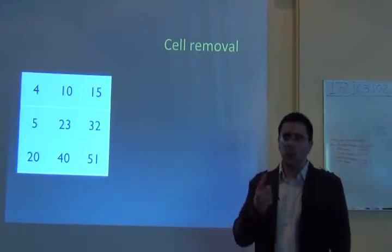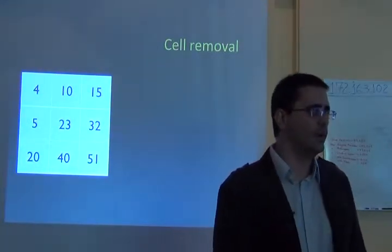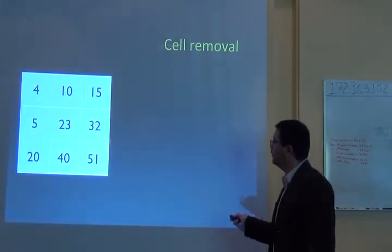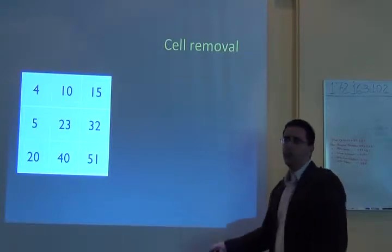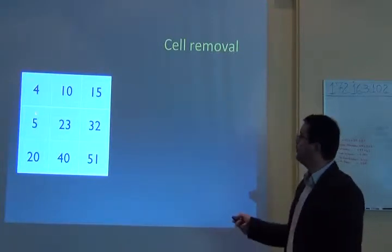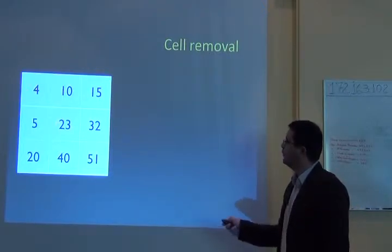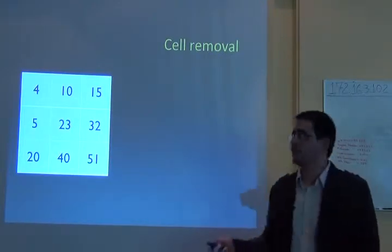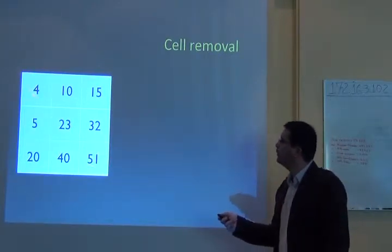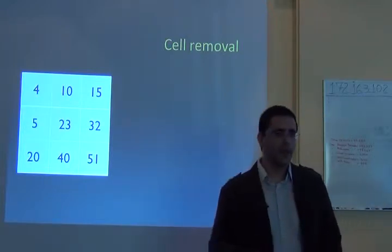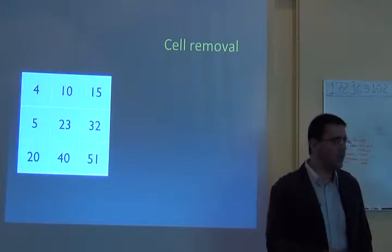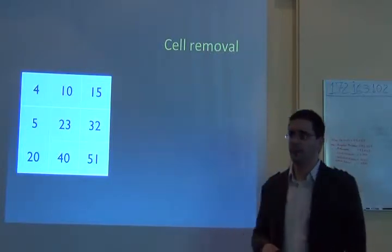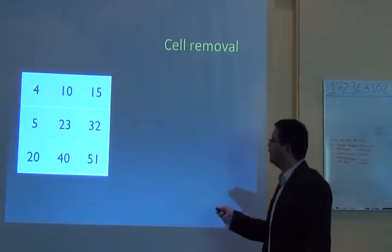Suppose you have data for one species in a geographical space — keeping it to one species because it's easier to understand. The data you're using could be species abundance — four individuals here, 51 here, 23 here — or it could be species richness, habitat suitability, probability of occurrence, functional diversity. You can put pretty much anything in here.